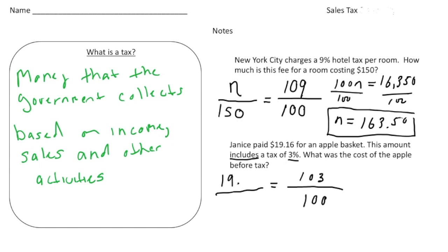So $19.16 goes here, and then the unknown will be here. So if you notice that this is going to be a smaller number than $19.16. This is going to be the actual cost of the apple basket before the tax was added. All right, so now we can write our equation.